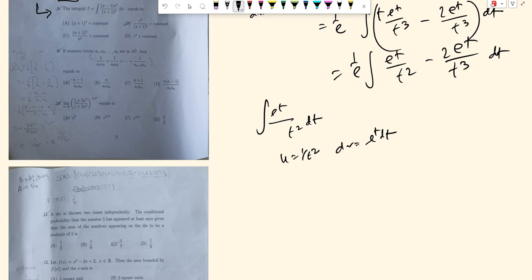Using integration by parts gives i equal to 1 over e times e to the power t over t squared minus 2 times the integral of e^t over t cubed dt.